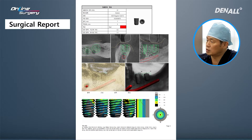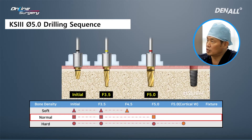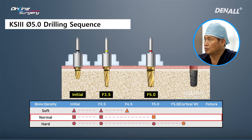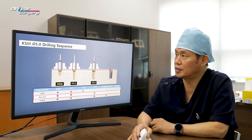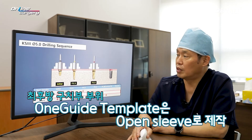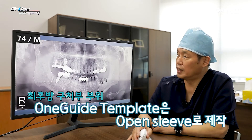This is the extraction socket — the alveolar bone state is fairly favorable. KS3 5.0 implants were planned: in number 36, 10 mm; in number 37, 7 mm. In the most distal area, we need to consider the patient's level of mouth opening, and the one guide template was made in an open sleeve type to be used for surgery.